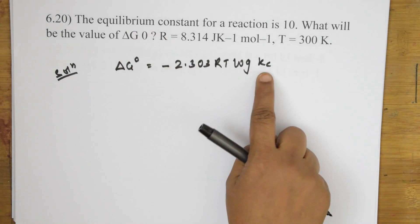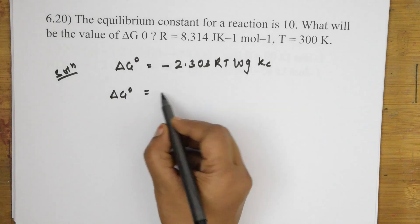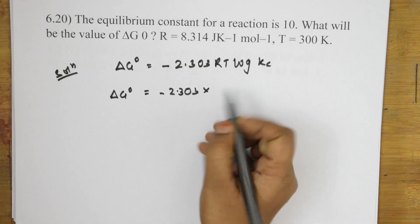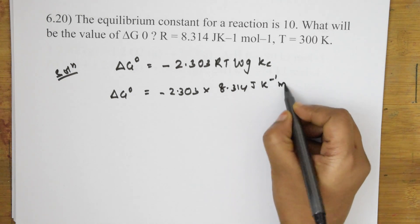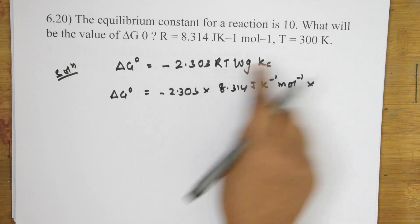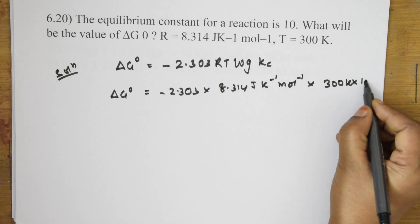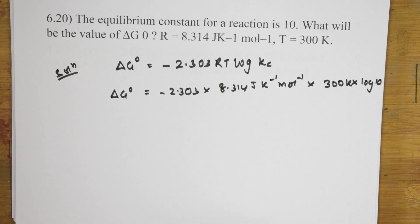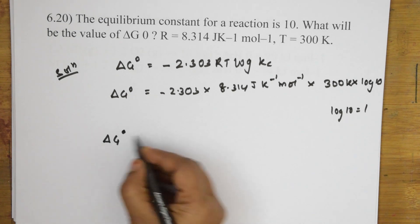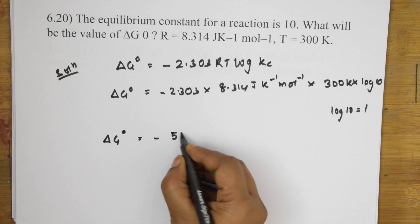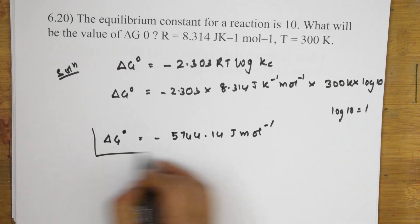So, what we have started because if the equilibrium constant, this is the equilibrium constant. Let us substitute delta G naught is how much now to minus 2.303 into R value they have given here 8.314 Joule Kelvin inverse mole inverse into T value they have already given 300K into log 10. Because whenever you multiply with 2.303, we take it in the base 10. Since log 10 is how much? Log 10 is nothing but 1. So, when I multiply this, I get an answer of minus 5744.14 Joule mole inverse. That's it. This is your answer.